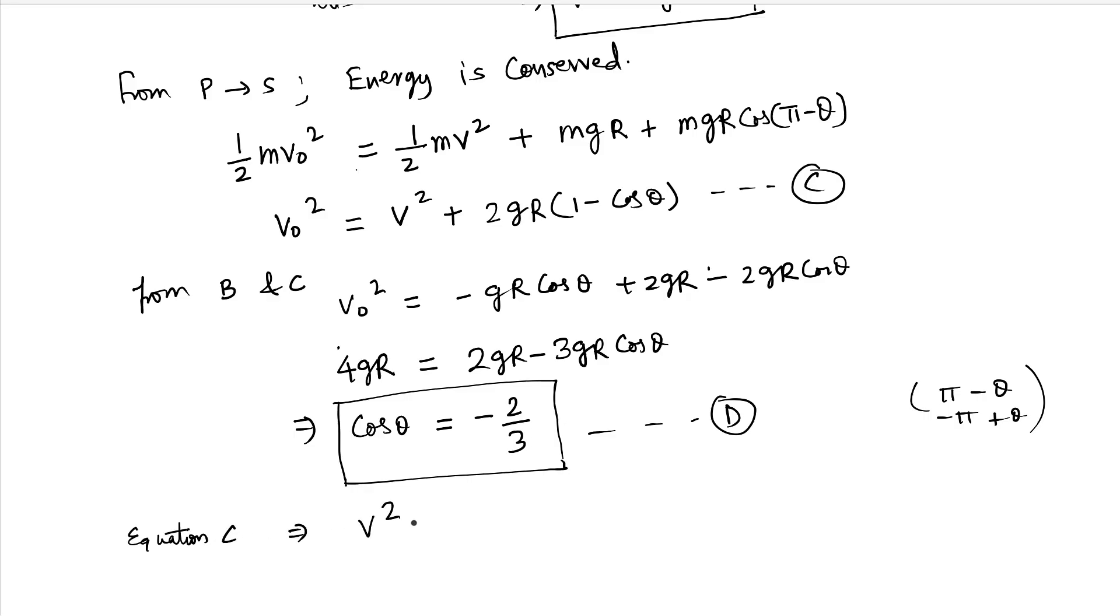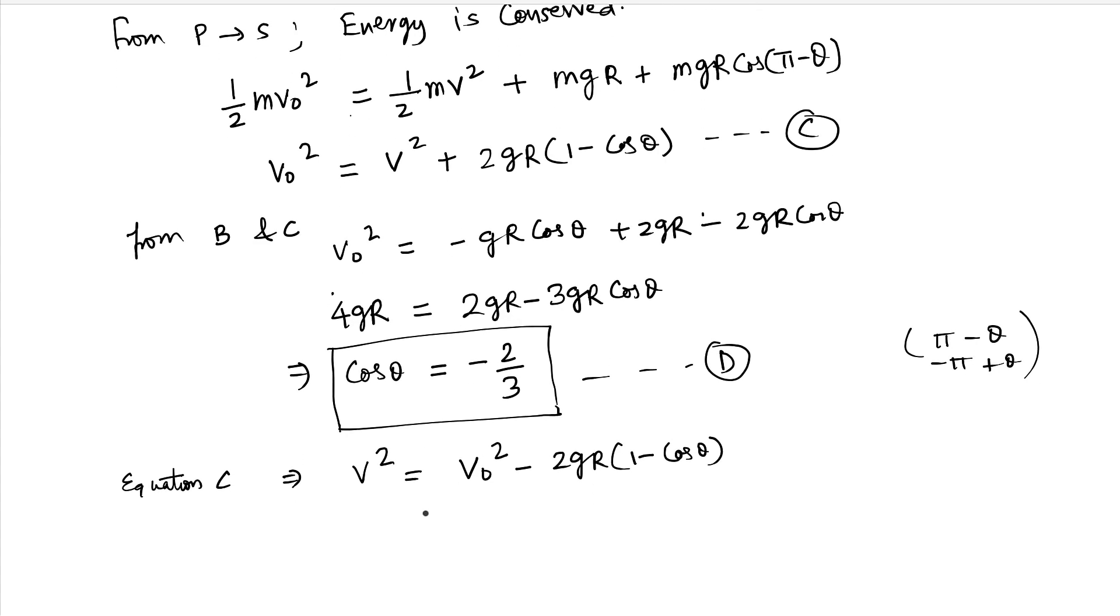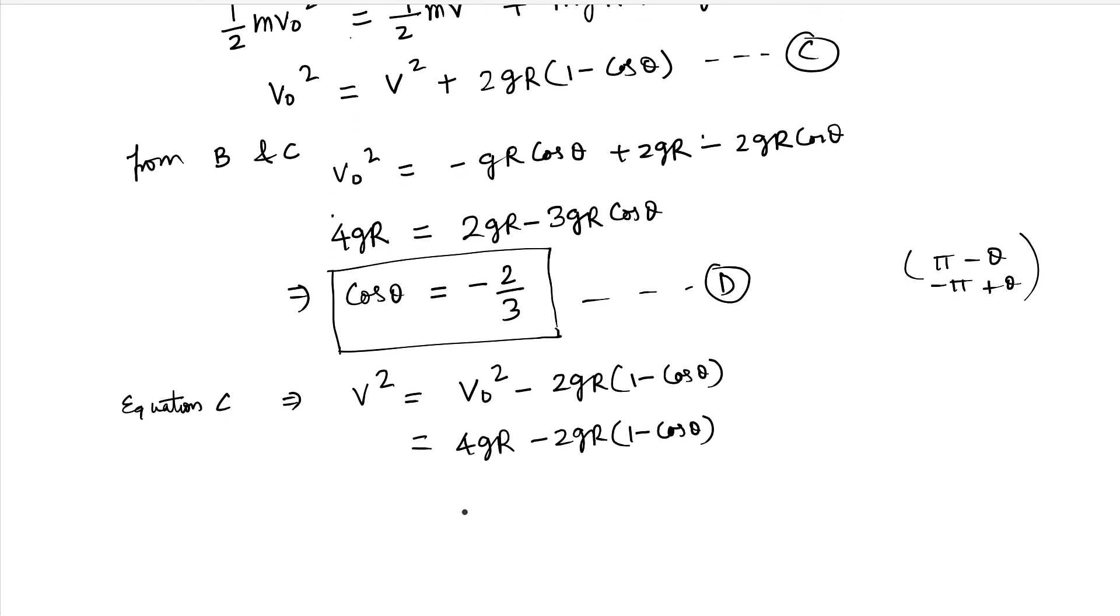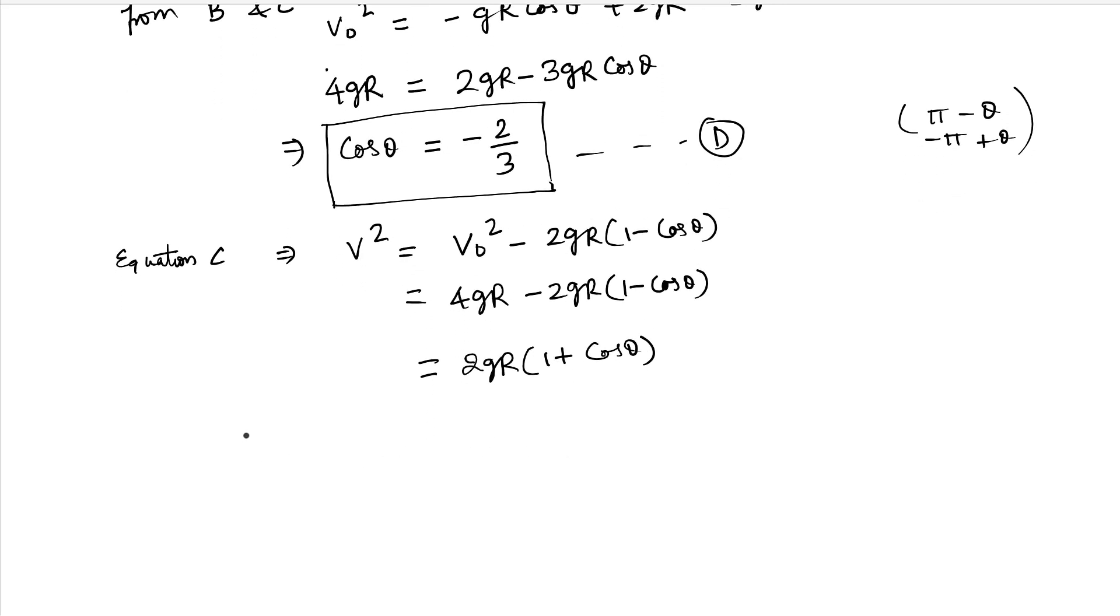Therefore V square equals 4gr minus 2gr(1 minus cos theta), which is 2gr(1 plus cos theta). Now let's write 1 plus cos theta as 2 cos square(theta by 2). Cos theta is cos(theta by 2 plus theta by 2), which is cos square(theta by 2) minus sin square(theta by 2). So 2 minus 1. Therefore 1 plus cos theta is 2 cos square(theta by 2).